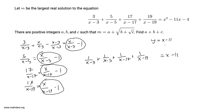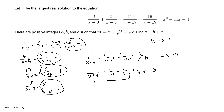With y = x - 11, the equation turns into 1/(y+8) + 1/(y+6) + 1/(y-6) + 1/(y-8) = y. The next thing we do is combine the outer pair and the inner pair together.